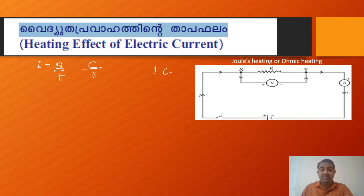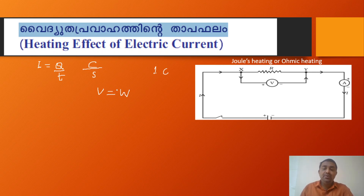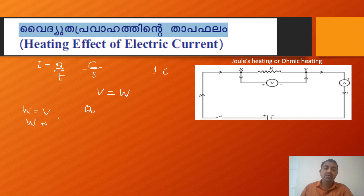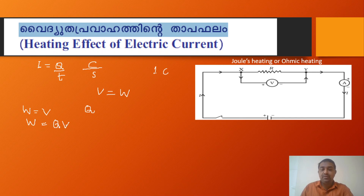The potential difference between x and y — one coulomb of charge is the work done. The potential difference V is equal to the work done in carrying one unit of charge — one coulomb of charge. So if we have a charge q and potential difference V, the total work done W is equal to q into V.